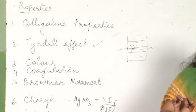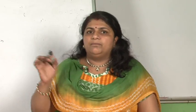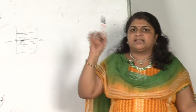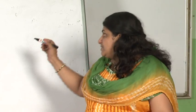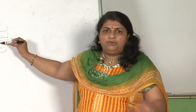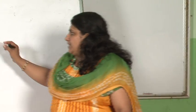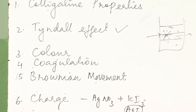The Tyndall effect operates because of the scattering of light by colloidal particles. The sky appears blue — that is also a board question. Blue light is scattered by the dust particles as well as water molecules present in the sky, so the blue wavelength is scattered and we see the sky as blue in color. Now it comes to coagulation — colloidal particles are charged.